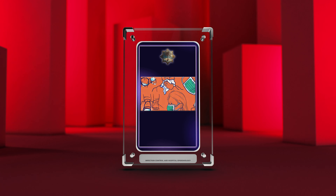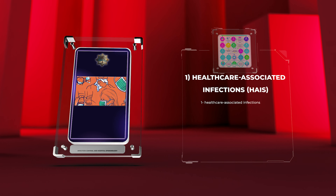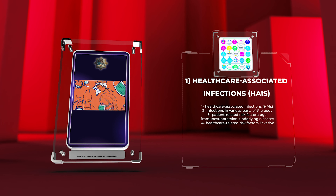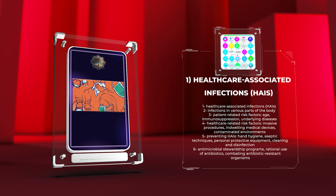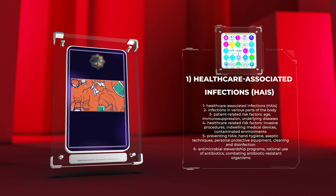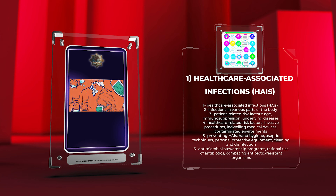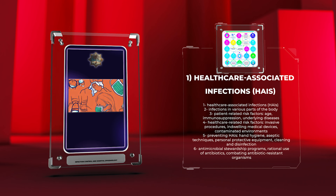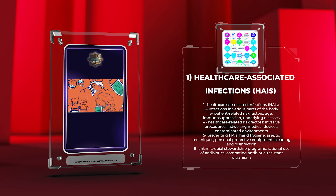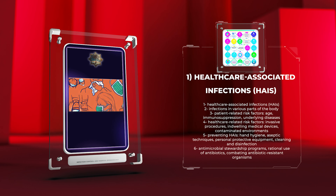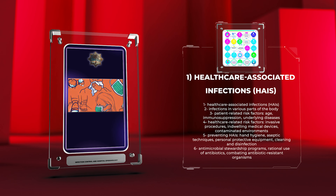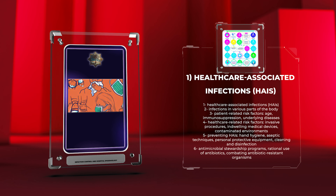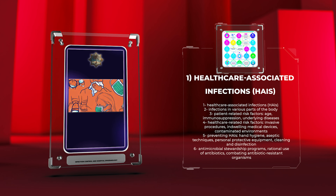Let's get started with our first topic. Healthcare-associated infections, commonly referred to as HAIs, are infections that patients acquire while receiving medical treatment in healthcare settings. These infections can occur in various parts of the body, including the bloodstream, respiratory tract, urinary tract, and surgical sites.